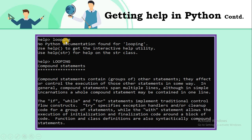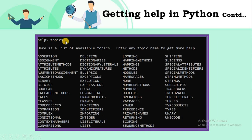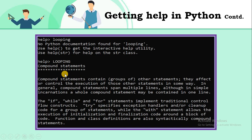One important point: when you use the 'topics' command, all topic names are displayed in uppercase letters, so you must use uppercase letters only. If you use lowercase letters, you will get an error — there will be no information found about the topic. For example, typing 'looping' in lowercase gives no information found about the loop.